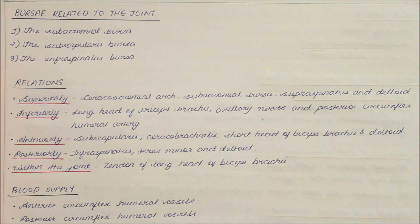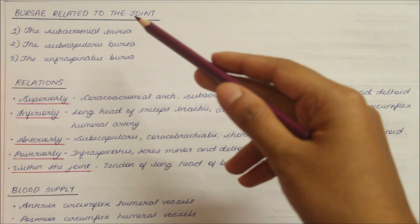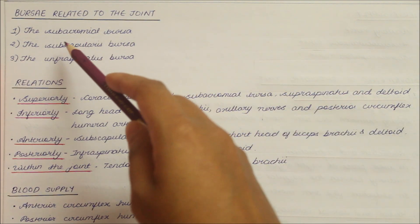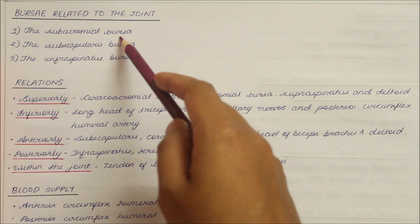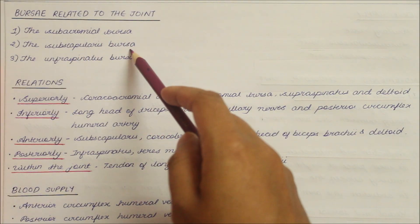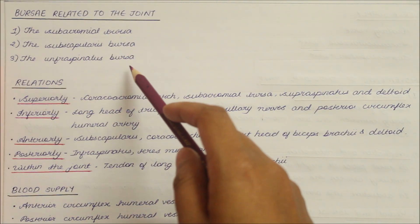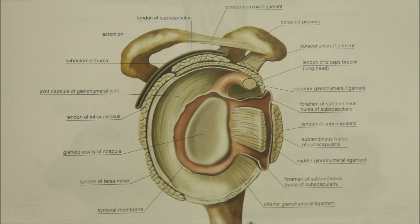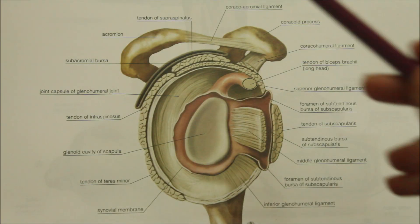Moving on to the bursae related to the joint: we have the subacromial bursa, the subscapularis bursa, and the infraspinatus bursa. Moving on to the relations of the shoulder joint.